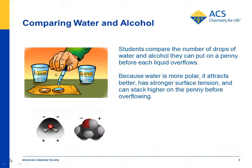Students do an investigation where they put the same number of drops of alcohol and water on two separate pennies and see how many drops they can get before the pile overflows. It's very clear that you can get many more drops of water than alcohol. The answer is the polarity of water — water is more polar than alcohol, attracts each other more strongly, and creates a stronger surface tension. Alcohol molecules are not as polar, don't have as strong a surface tension, and the pile of alcohol flows over the penny much quicker.